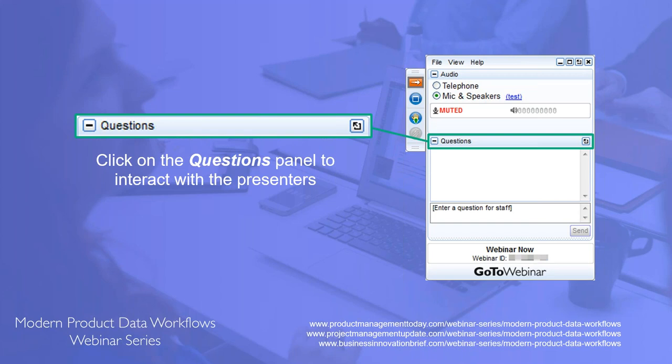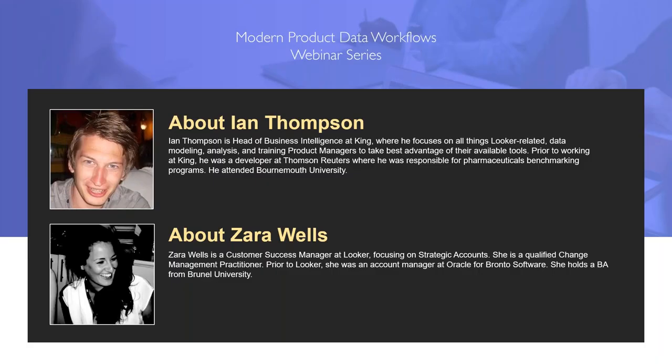We'll try to answer as many questions as we can throughout and at the end of the presentation. If you have any audio issues, you may dial in by phone by selecting the more button in the upper right and choosing switch to phone. Today I'm talking to Ian Thompson, head of business intelligence at King, and Zara Wells, strategic customer success manager at Looker. Ian has a unique perspective on getting product managers up to speed with data.